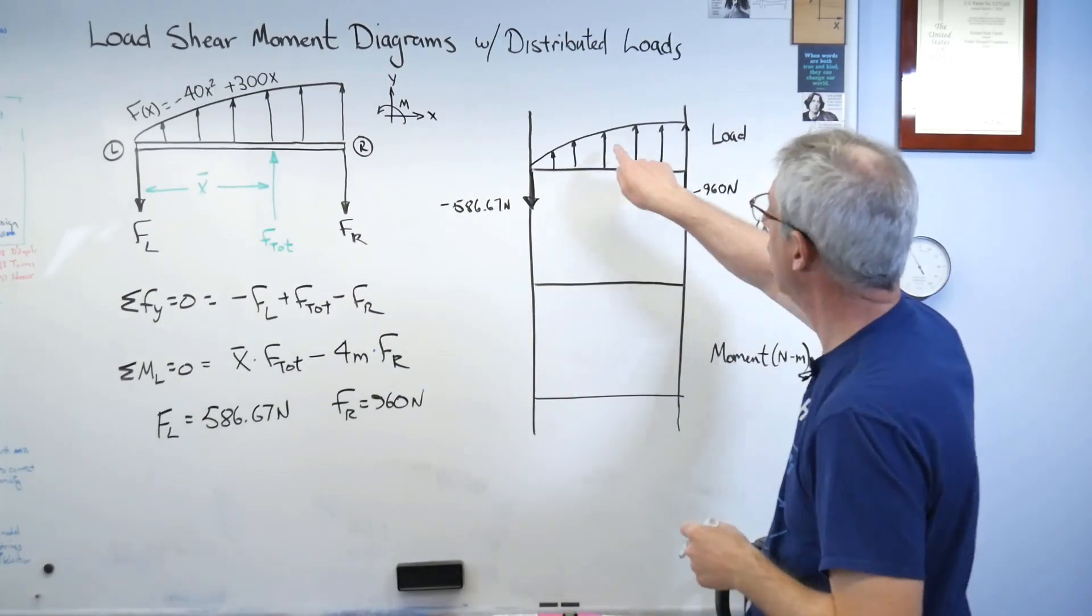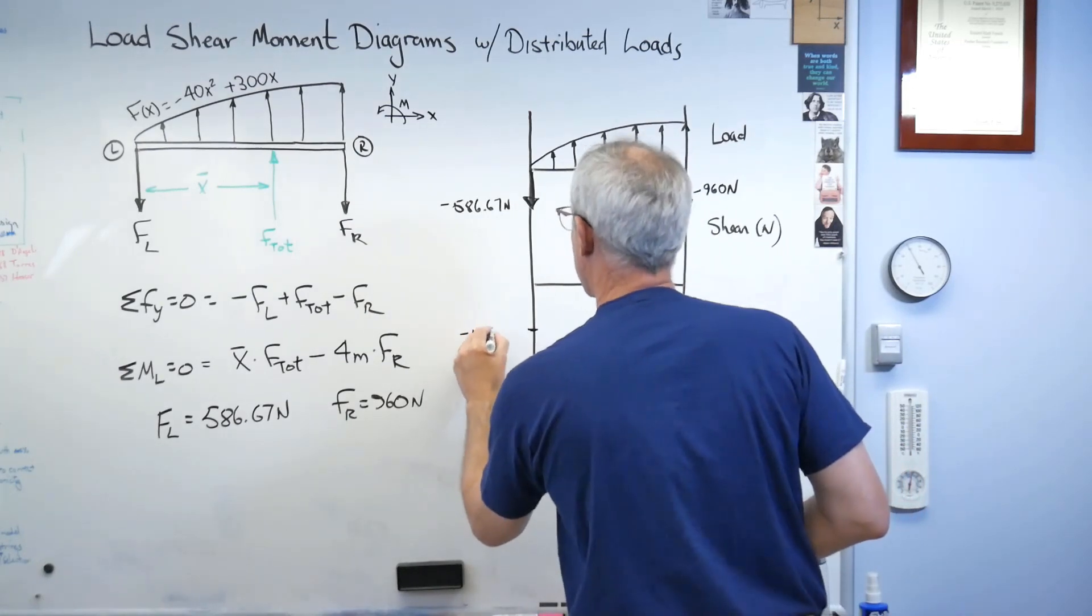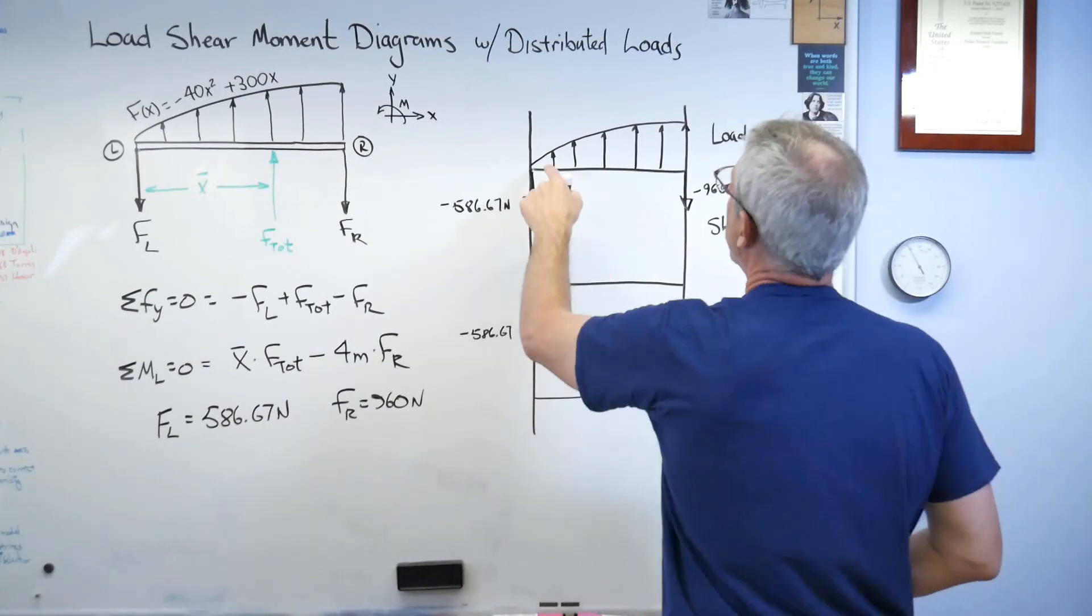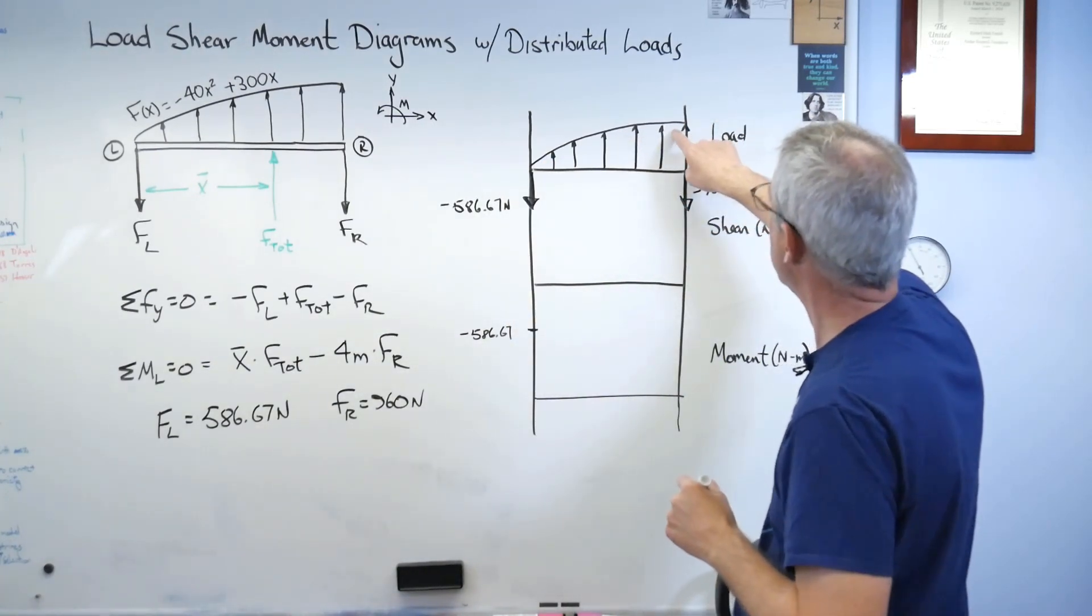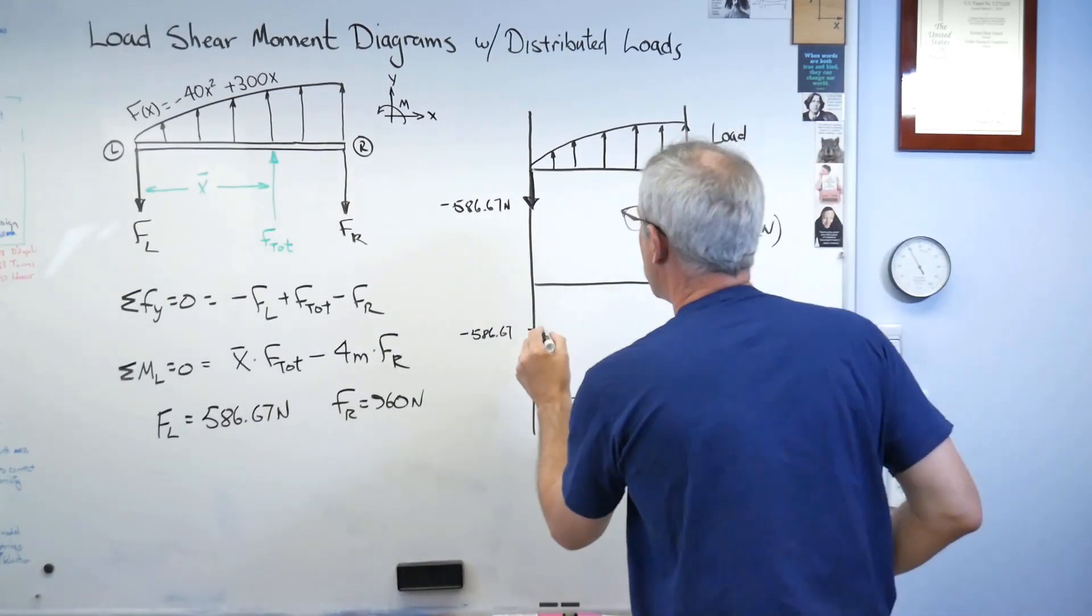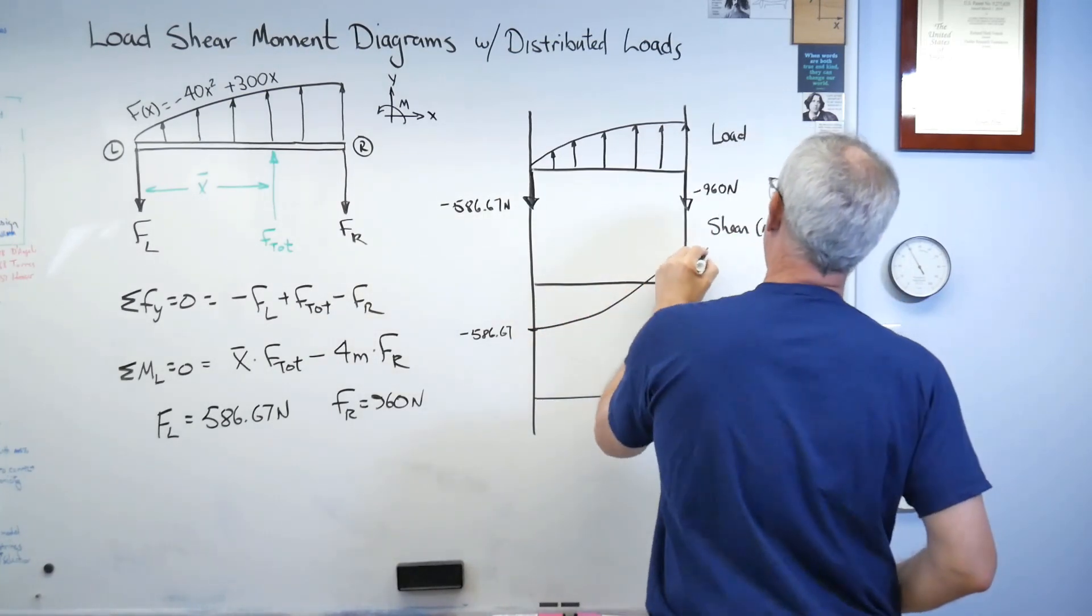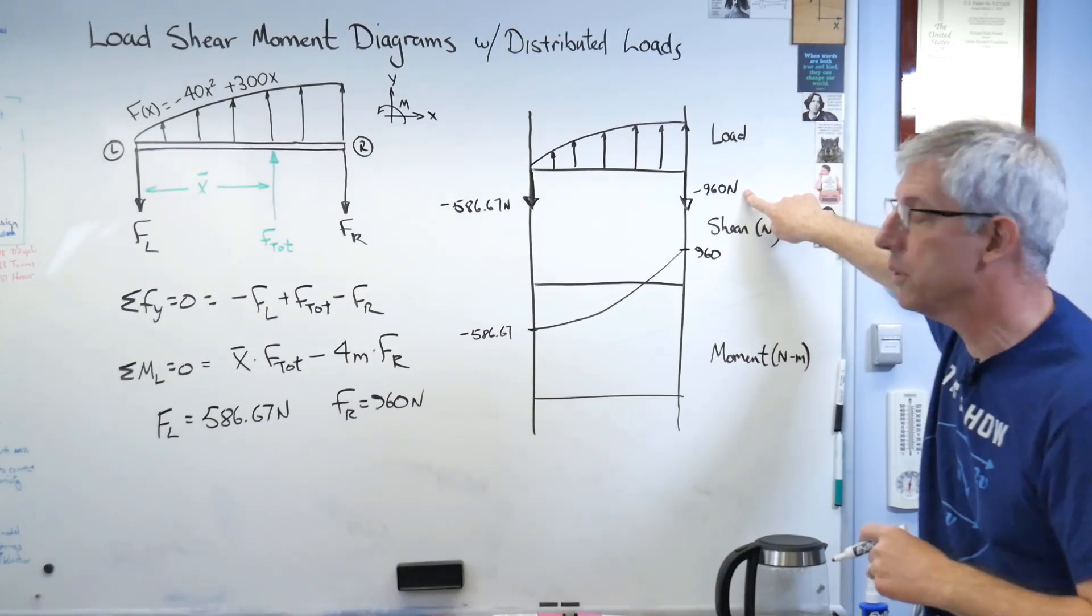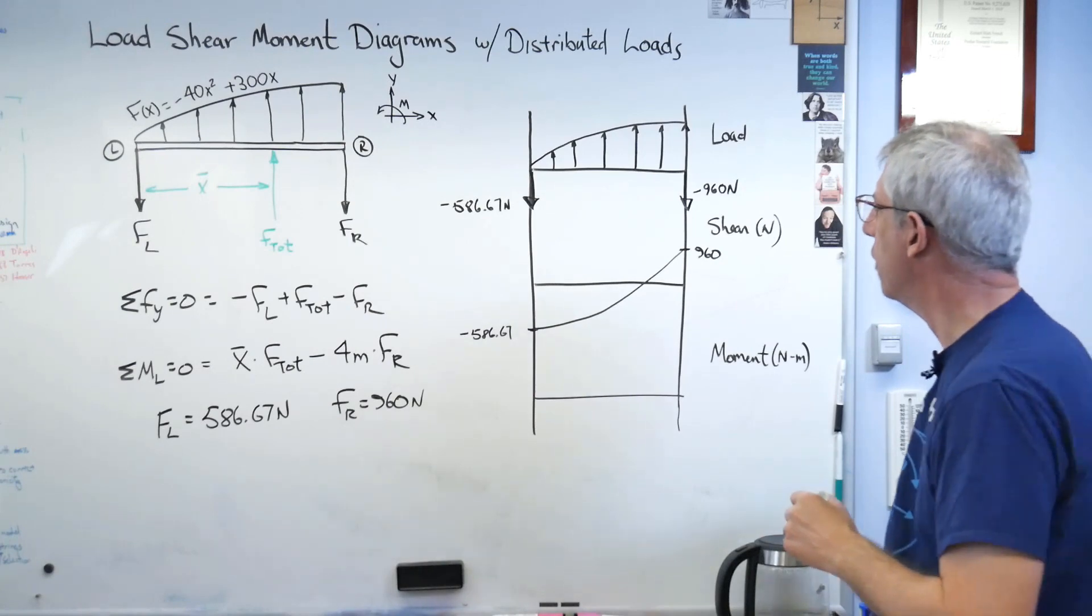Now the shear is just the integral of that. For shear, I'm going to start down here. Remember, height here equals slope there. So my height is zero. My initial slope will be zero. Height is becoming almost a constant here, so my slope out at this end will also be about a constant. Because I've got a negative 960 reaction force at the end, that better end at 960. You can see I don't have that scaled very well.